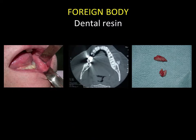An example of an exogenous foreign body caused by dental treatment. In this case, the dentist practitioner carried out a treatment involving the construction of a temporary resin crown, and part of the resin stuck to the cheek, as can be seen on the CT scan. It was subsequently removed because of discomfort accompanied by an inflammatory reaction.